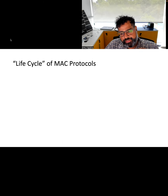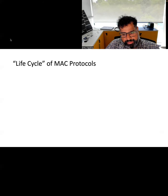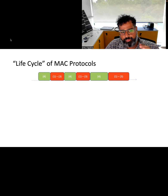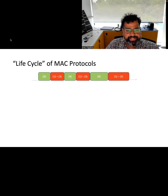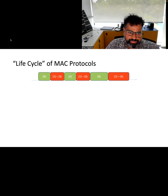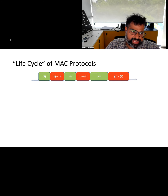Let's look at MAC protocol states in greater detail. This is a typical timeline or life cycle for a MAC protocol. The green parts are where nodes are in idle listening mode, and the red parts are when communication is happening — one of the transmit or receive states. In this example, idle listening is about as dominant as the communication period.